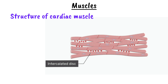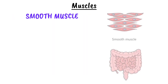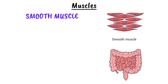Smooth muscles are the silent regulators of internal organs. Unlike skeletal and cardiac muscle, smooth muscle is found in the walls of internal organs such as the digestive tract, blood vessels, airways, bladder, and the uterus. Smooth muscle is responsible for involuntary movements that regulate essential bodily functions such as blood pressure, digestion, and respiration.